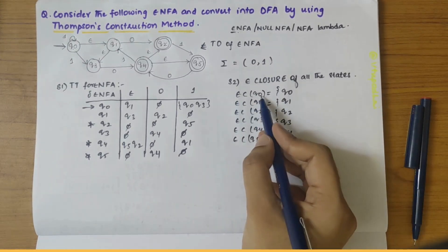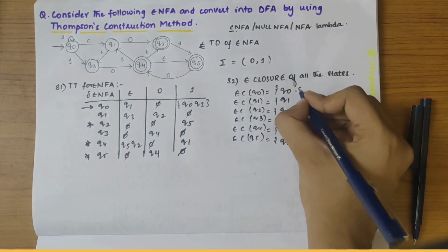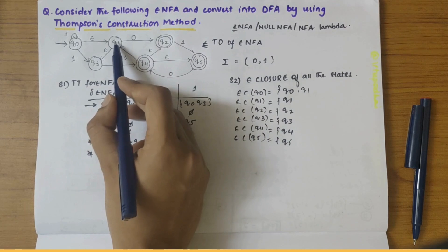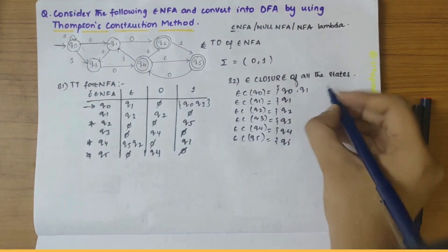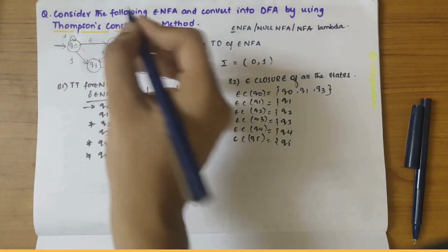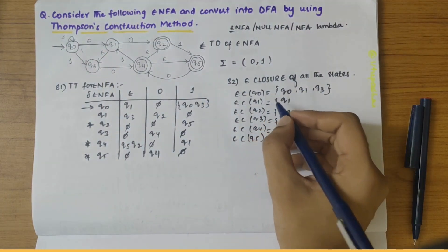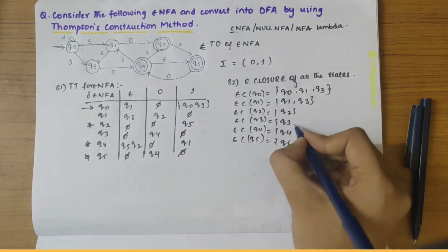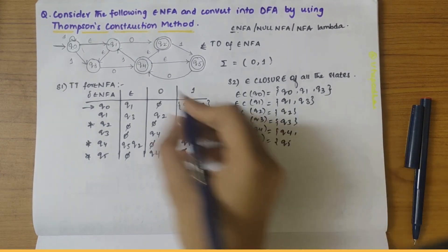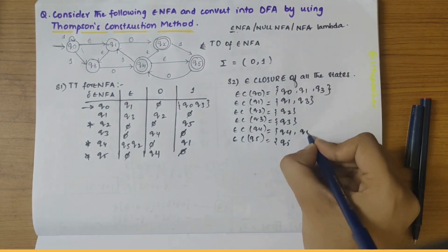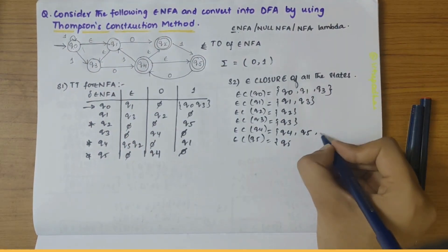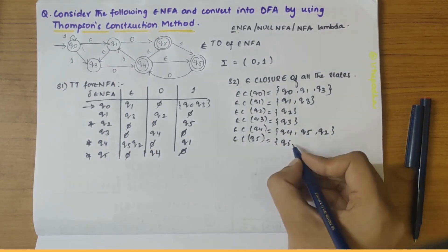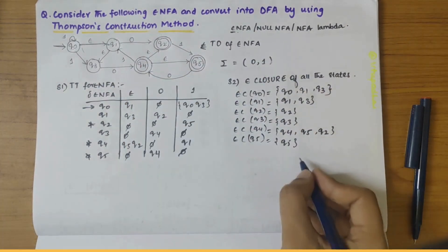Epsilon closure of Q0: Q0 is there, Q1 is there from Q0's epsilon transition, and from Q1, Q3 is there. From Q3 there's nothing. So epsilon closure of Q0 = {Q0, Q1, Q3}. Epsilon closure of Q1: Q1 goes to Q3, from Q3 nothing. So {Q1, Q3}. Epsilon closure of Q2: nothing, so just {Q2}. Epsilon closure of Q3: nothing, so just {Q3}. Epsilon closure of Q4: goes to Q5 and Q2. So {Q4, Q5, Q2}. Epsilon closure of Q5: nothing, so just {Q5}.